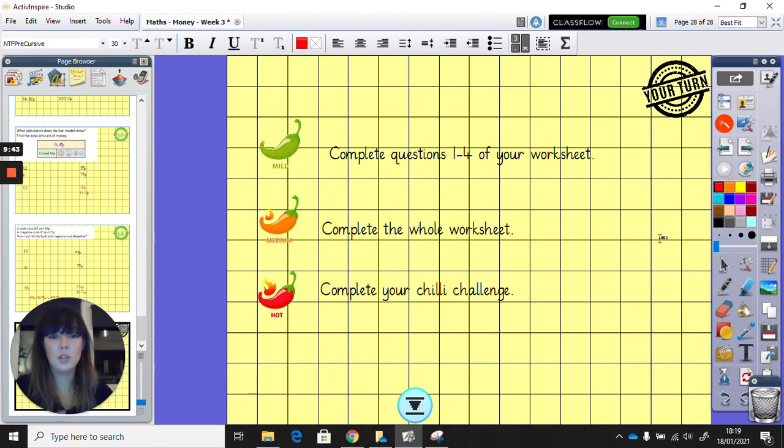Right, now it's your turn. So if you want to do the mild challenge, you need to complete questions 1 to 4 of your worksheet. If you want to do the medium challenge, you need to complete your whole worksheet, please. And if you want to do your hot challenge, you need to complete your chili challenge worksheet, which is problem solving. Take a picture or get a grown-up to take a picture of your answers or pop your answers on your portfolio. And then we will mark them. Have a lovely weekend. Bye!